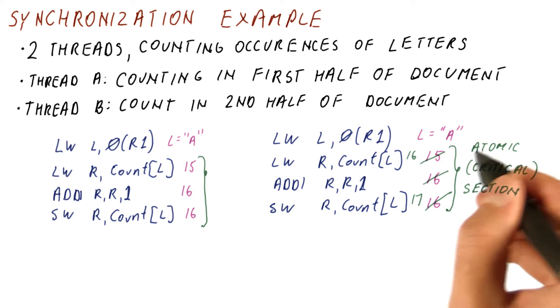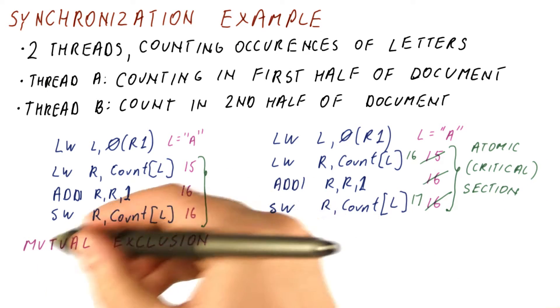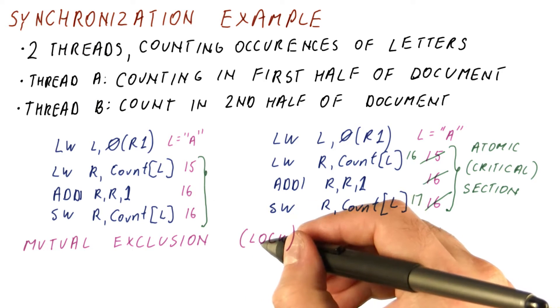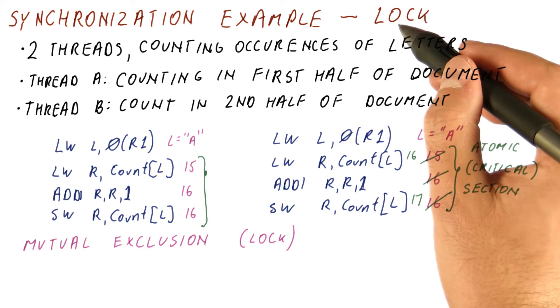The type of synchronization we use for atomic sections is called mutual exclusion, or lock. So this is really an example of where a lock will be needed.